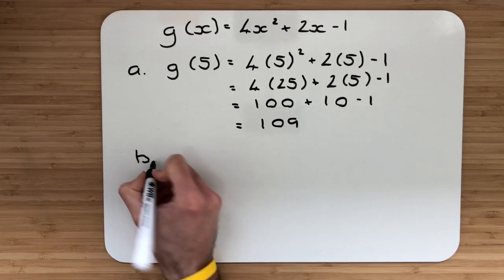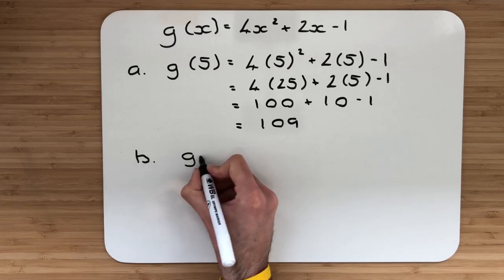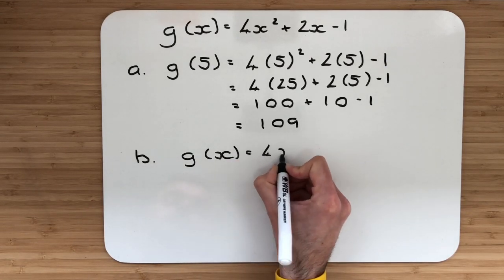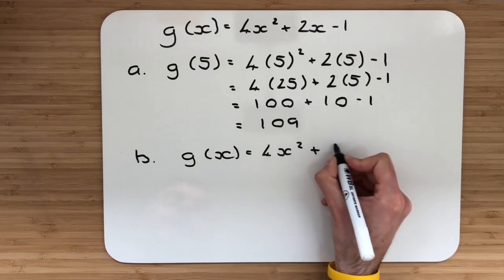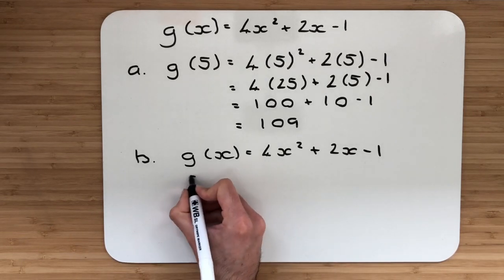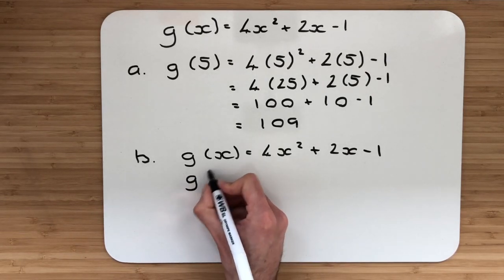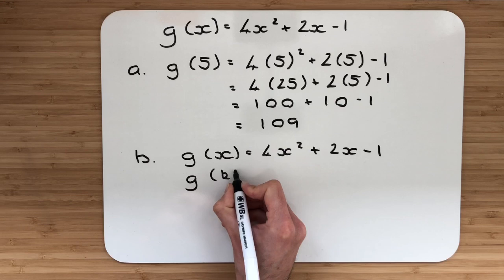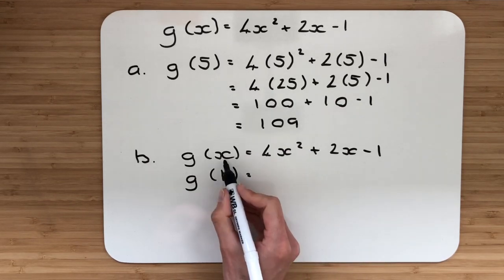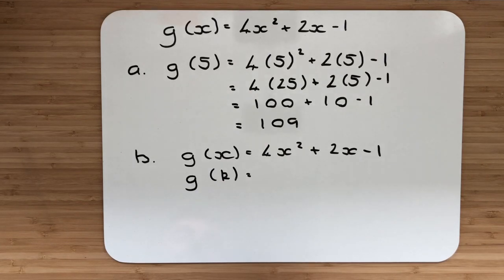Part b, let's take our function again. So g of x, and that is equal to 4x squared, add 2x, subtract the 1, and I want to find an expression in this instance of g of k. So wherever there is an x, I'm going to replace it with the letter k.